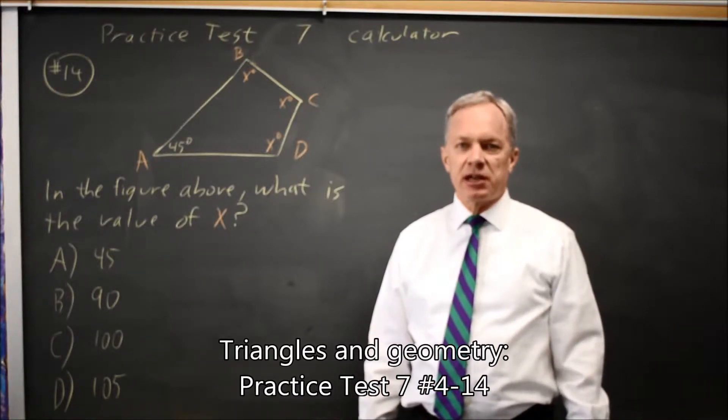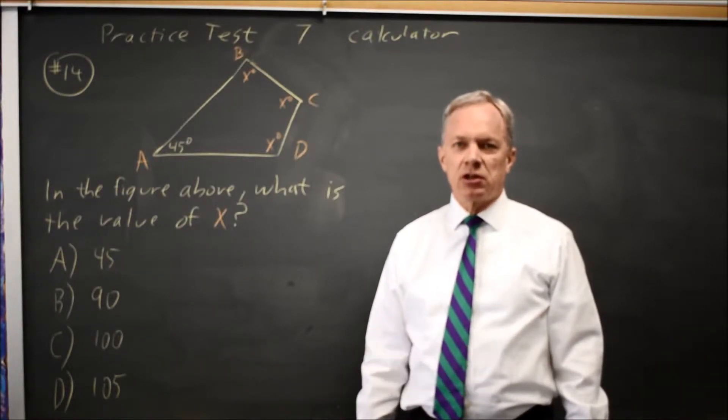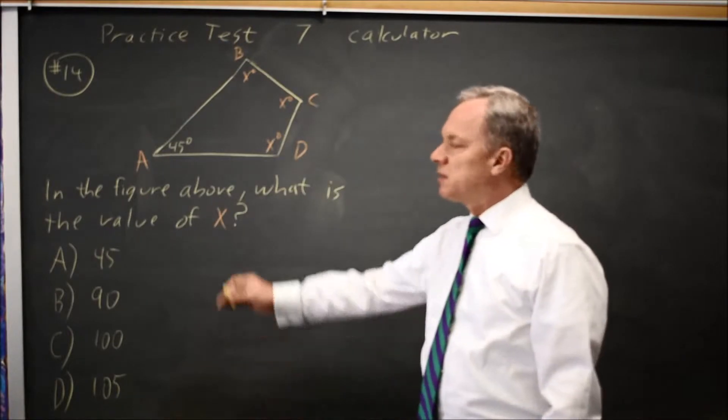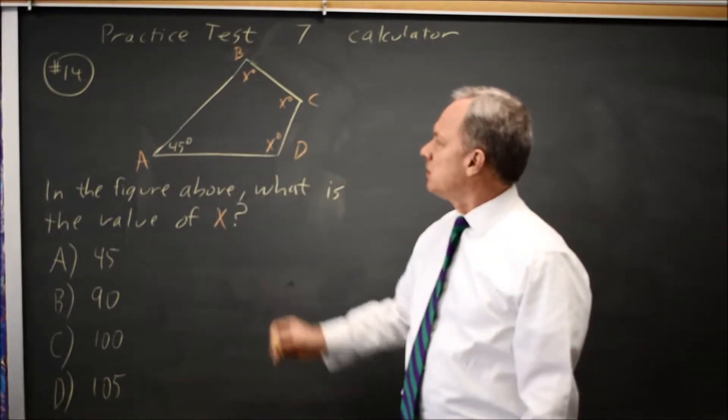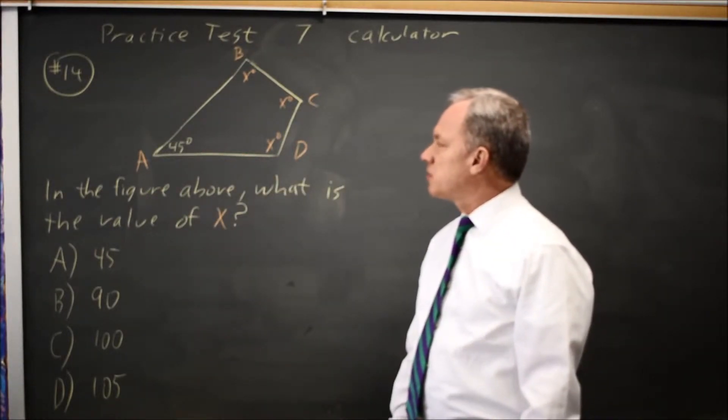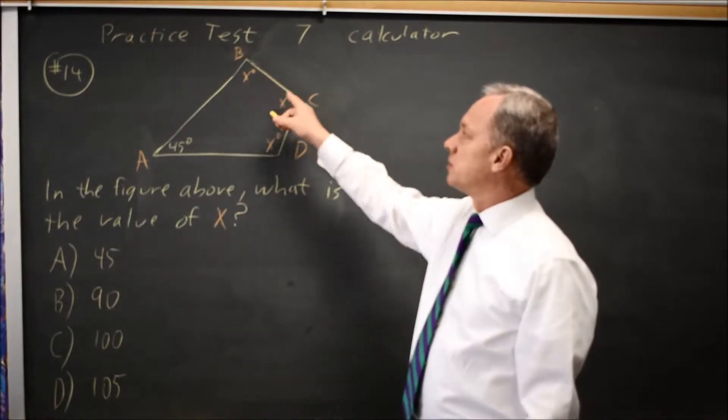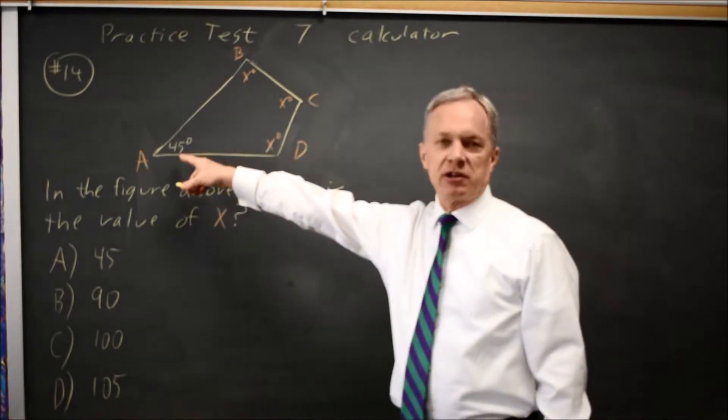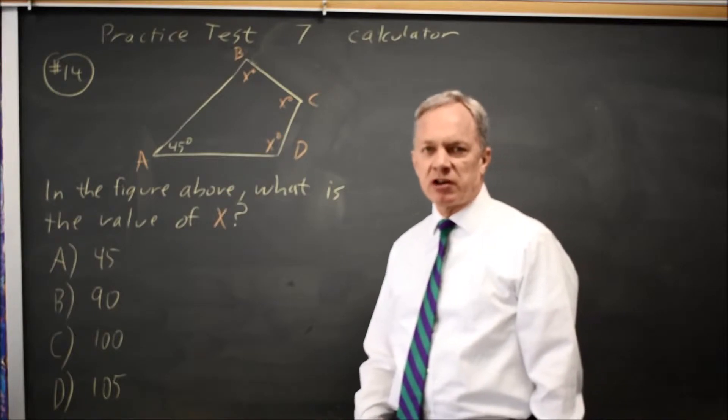This is SAT test 7, calculator question number 14. College Board gives us a diagram that's supposed to be to scale and says what is the value of angle x, where there's three angles all of measure x plus 45 degrees to make up a quadrilateral.